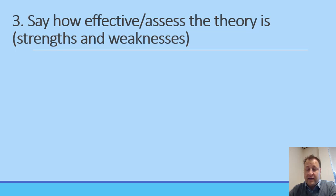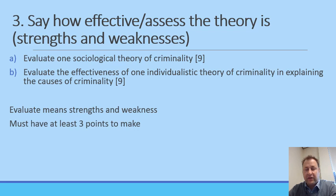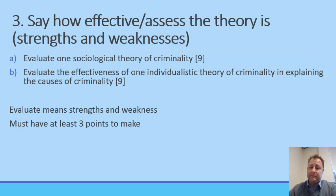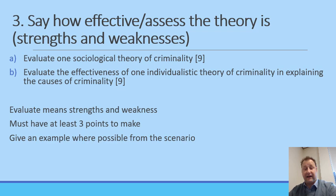The third question type is probably the hardest — strengths and weaknesses. These are generally longer questions. You need strengths and weaknesses of all the theories. For a nine-marker, make at least three points and explain them in paragraphs; for a six-marker, do two. Think two to three marks for each point. If you can link it to the scenario — for example, 'a weakness of most sociological theories is that it overestimates that poor people will commit crime' — that makes your answer even better.